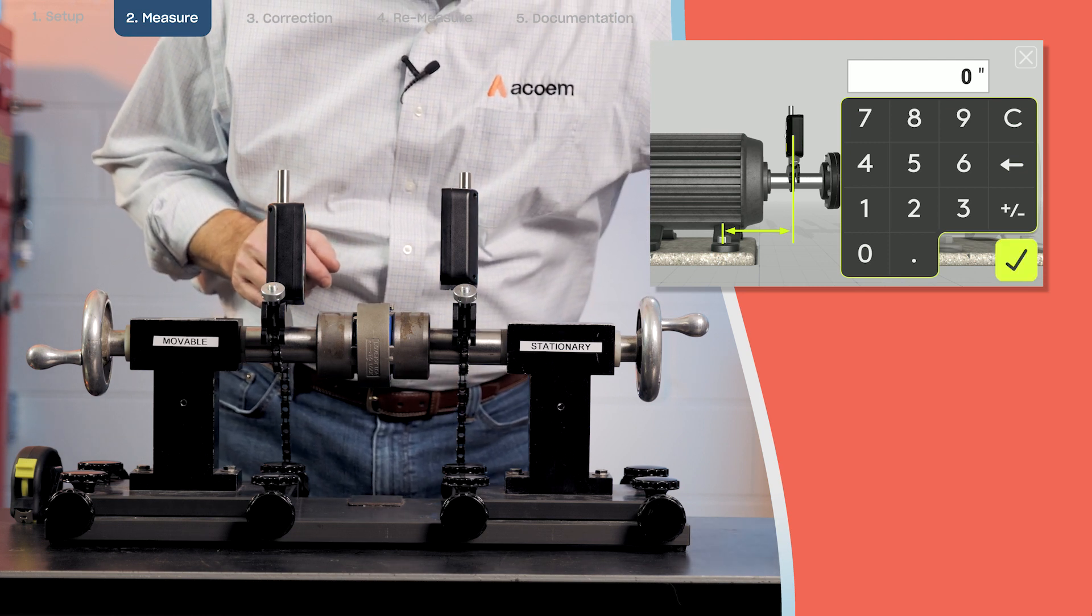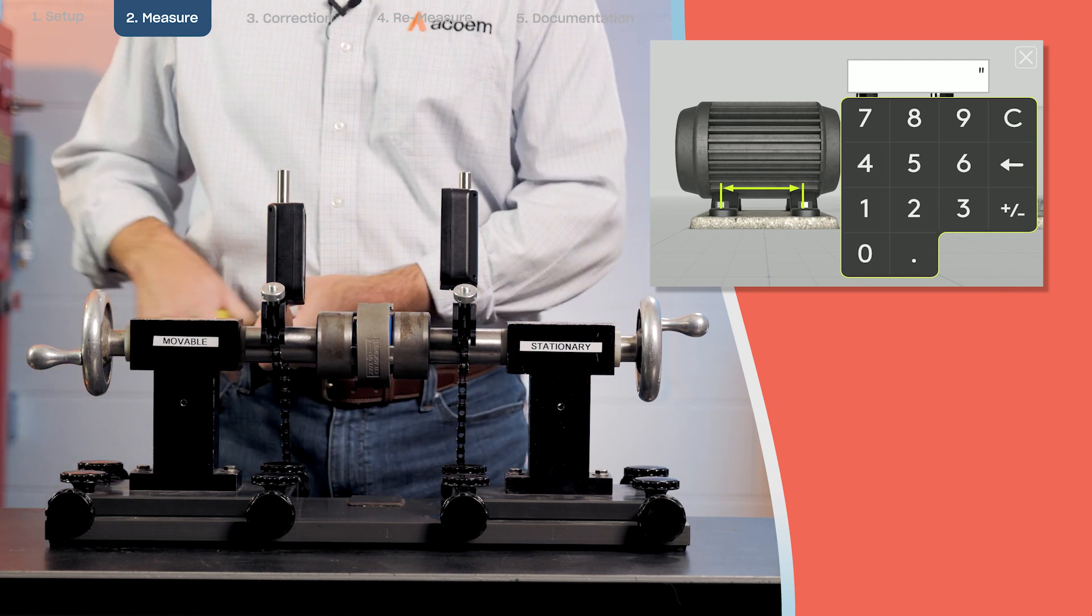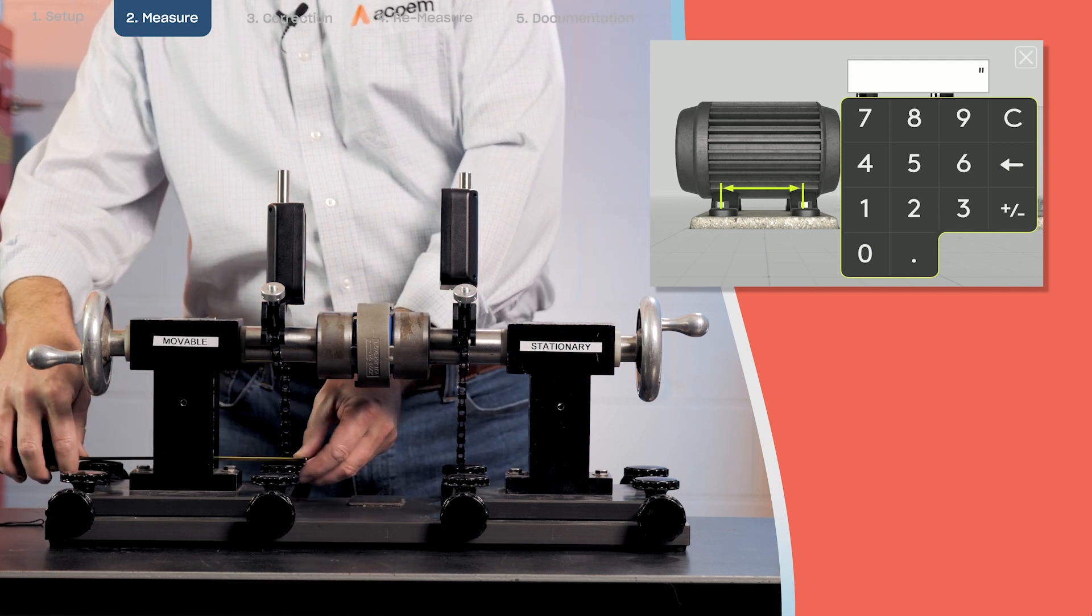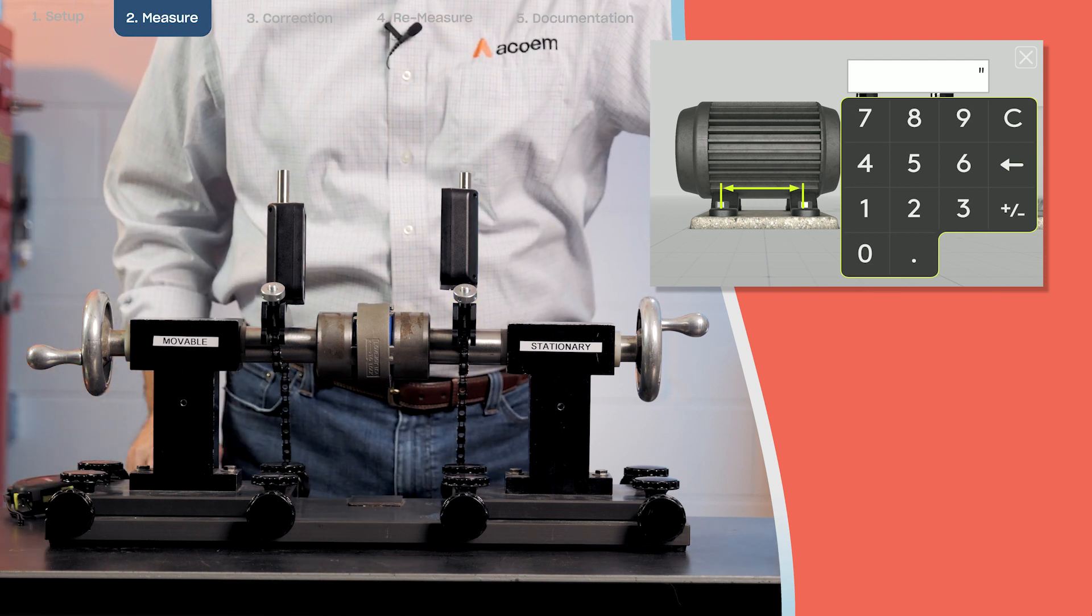So that dimension is zero. Next is from the front feet to the rear feet of the movable machine. Here we have seven inches.